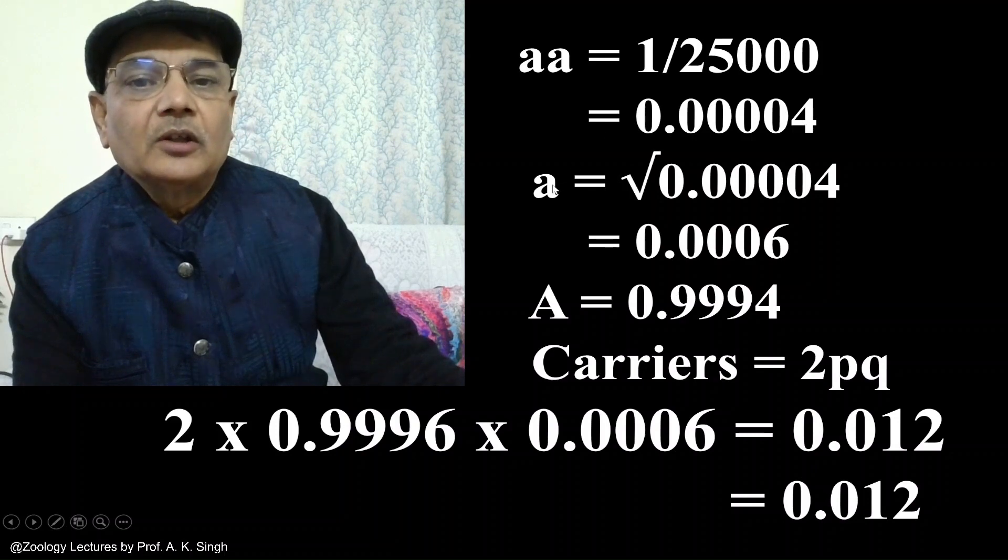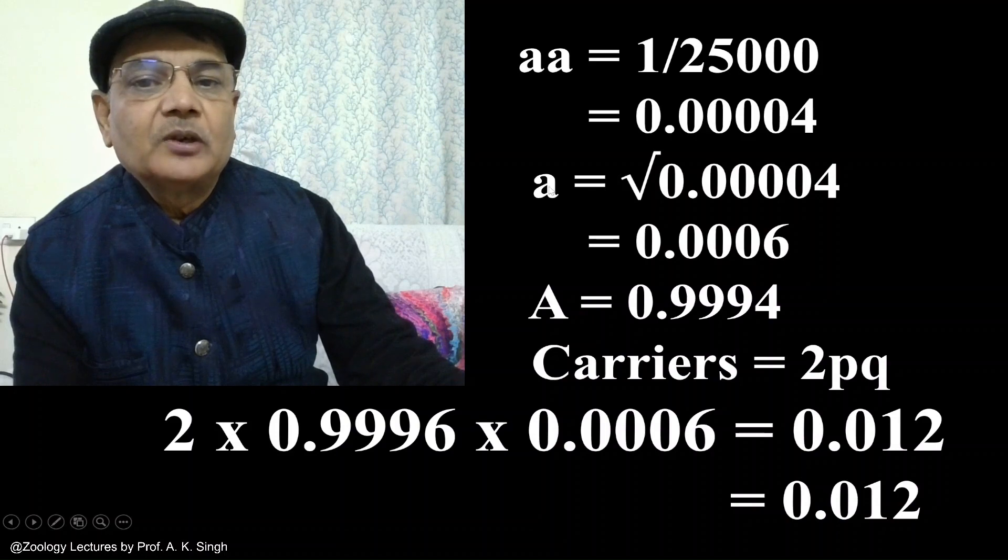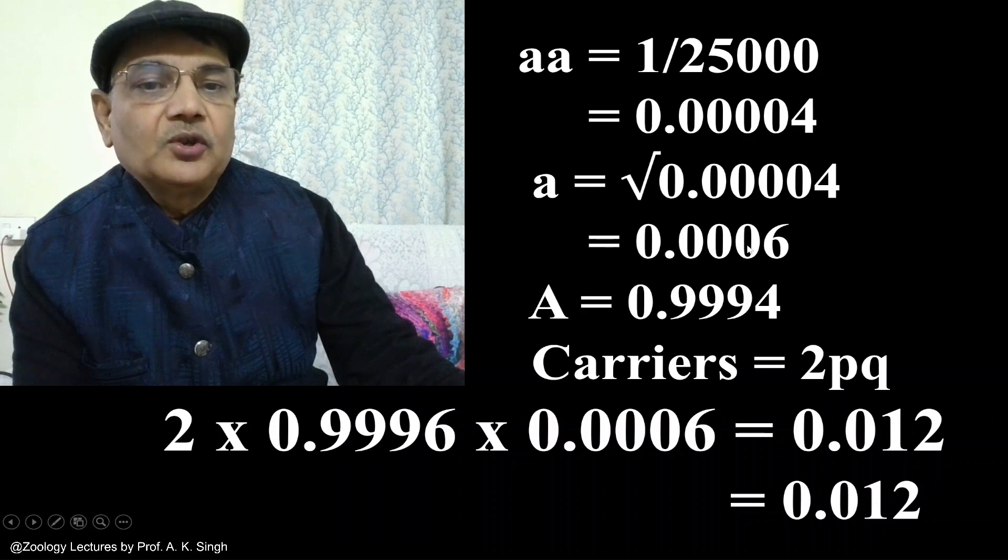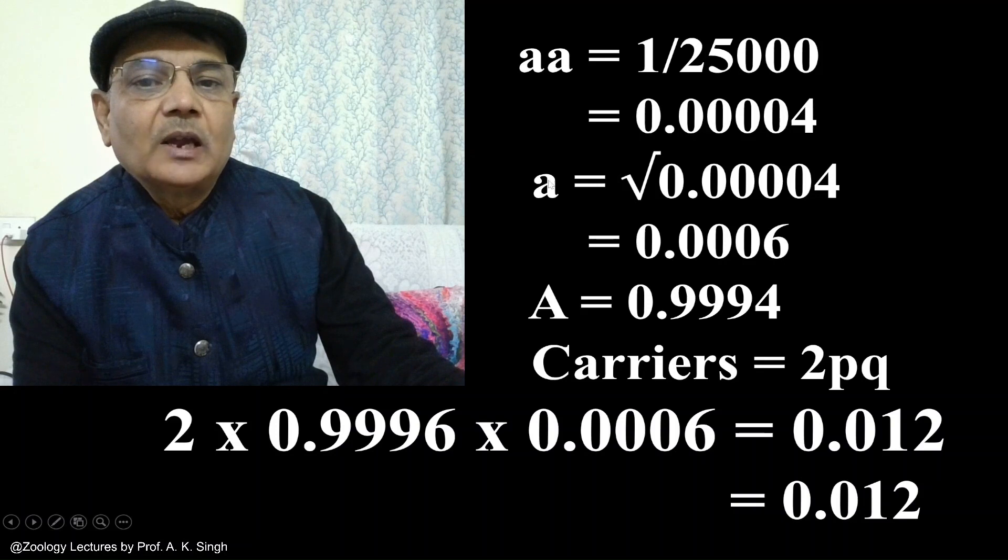Now the frequency of small a can be calculated in this population. This will be equal to square root of 0.00004 and it comes to 0.0006. So the frequency of the recessive allele, small a, is 0.0006.